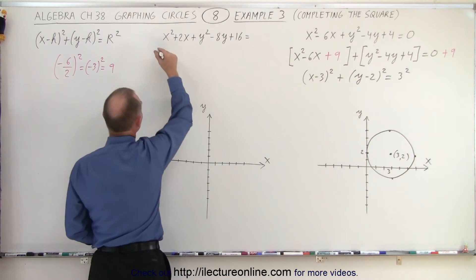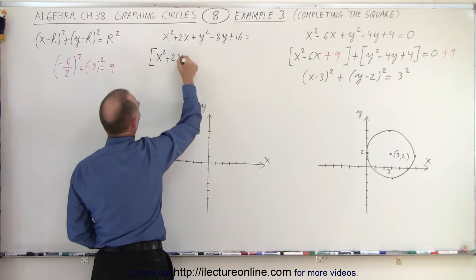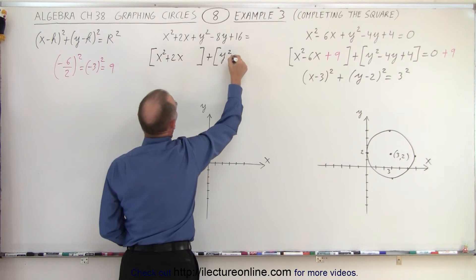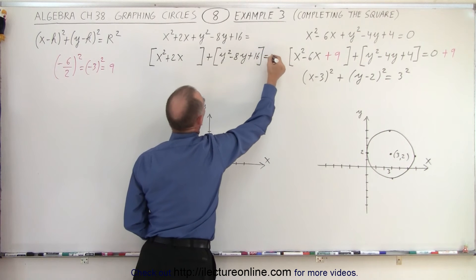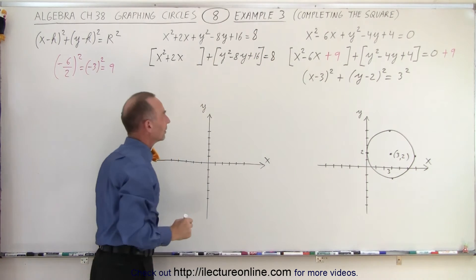We'll do the same over here. Again, we'll write it using brackets. It's x squared plus 2x, and we'll leave some space, plus y squared minus 8y plus 16 is equal to... Oh, I forgot to put a number there. How about the number 8? There we go. That will work.